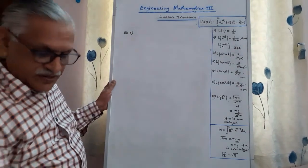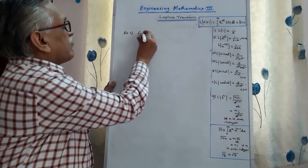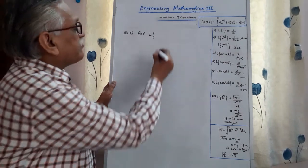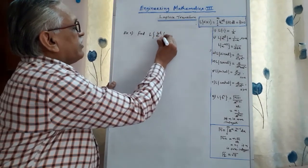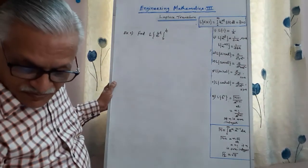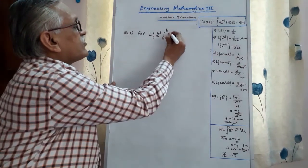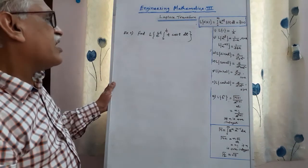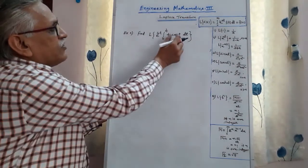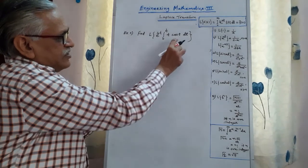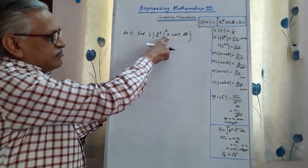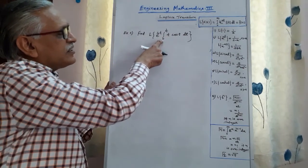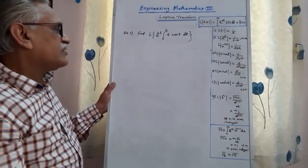Second example: find the Laplace transform of e^(4t) times the integral from 0 to t of t·cos(t) dt. Again, a combination of more than two theorems. Going from right to left: first find the Laplace of cos(t), then multiplication by t, then the Laplace of integral, and finally the first shifting theorem.